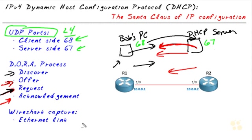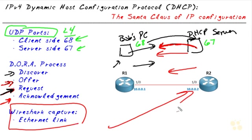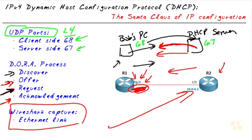We'll go ahead and lab up a quick DHCP server — we'll make R2 a DHCP server. Then we'll have R1 act as a DHCP client using the command "ip address dhcp" in interface configuration mode on R1, and look at the full DHCP conversation between R1 as client and R2 as server.